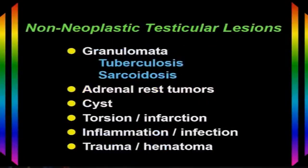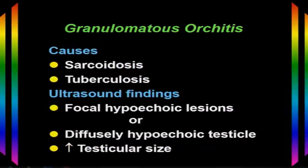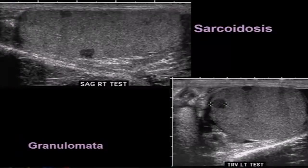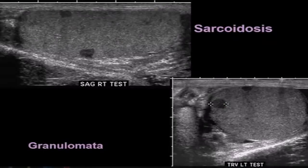Sometimes we encounter other lesions in the testicle that are non-neoplastic, such as granulomas from tuberculosis or sarcoidosis, and rarely adrenal rest tumors. Granulomatous orchitis can be caused by sarcoidosis or tuberculosis and may present with focal hypoechoic lesions or diffusely hypoechoic testicles with enlargement. Here's a patient with sarcoidosis who had multiple hypoechoic lesions in each testicle, all similar in size and echotexture — given his history of sarcoidosis, the diagnosis of granuloma was made.